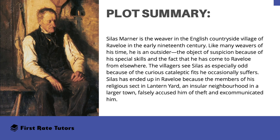On to the plot summary. Silas Marner is the weaver in the English countryside village of Raveloe in the early 19th century. Like many weavers of his time, he is an outsider, the object of suspicion because of his special skills and the fact that he has come to Raveloe from elsewhere. The villagers see Silas as especially odd because of the curious cataleptic fits he occasionally suffers. Silas has ended up in Raveloe because the members of his religious sect in Lantern Yard falsely accused him of theft and excommunicated him.